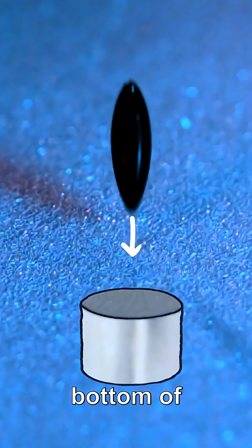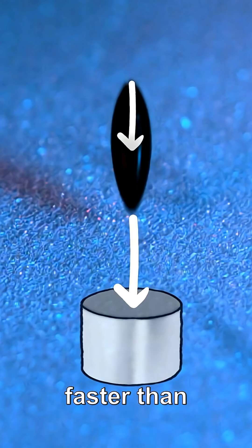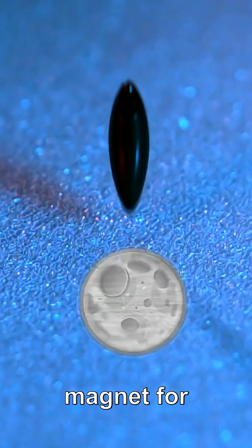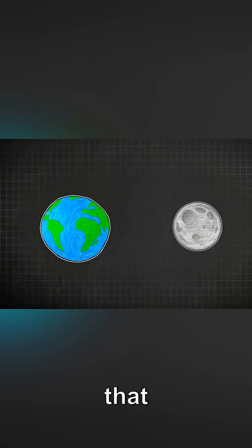The magnet is pulling on the bottom of the droplet harder than on the top of the droplet, so the bottom is actually falling faster than the top. If you swap out the magnet for the moon and the droplet for earth, you get a situation that describes exactly why we have tides.